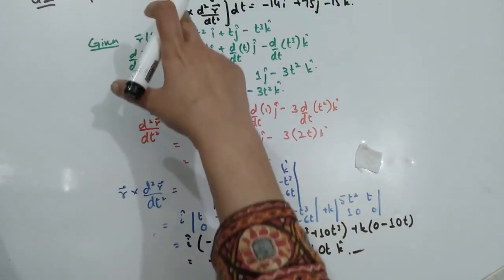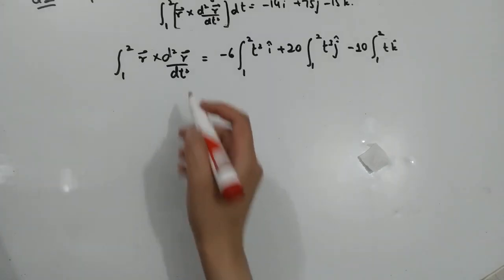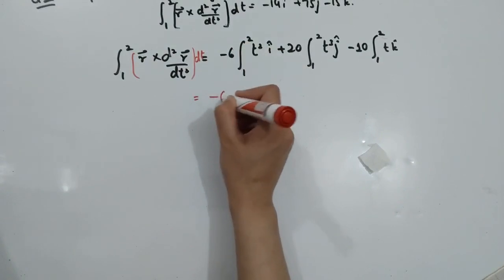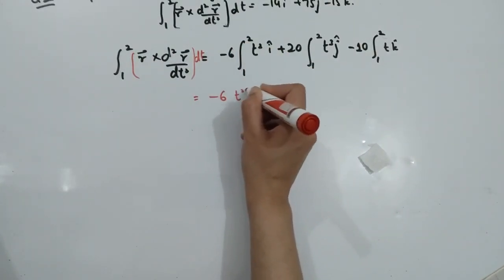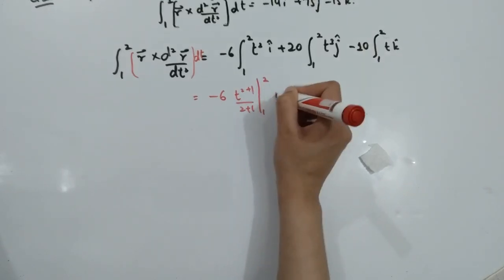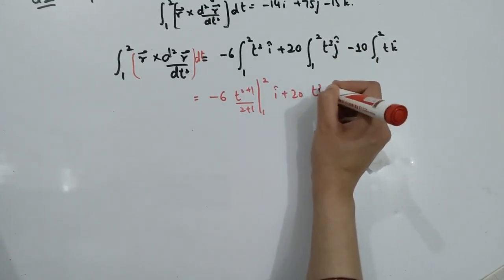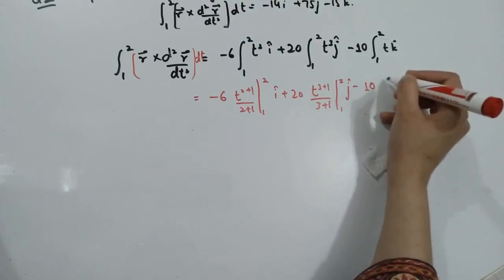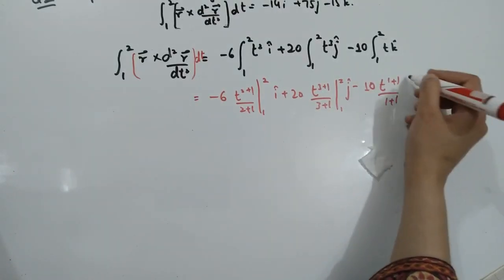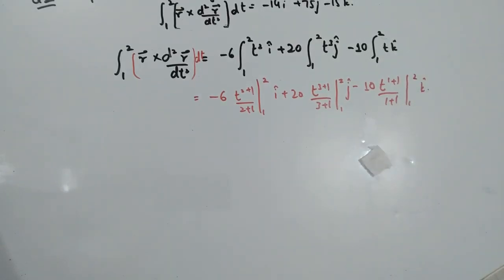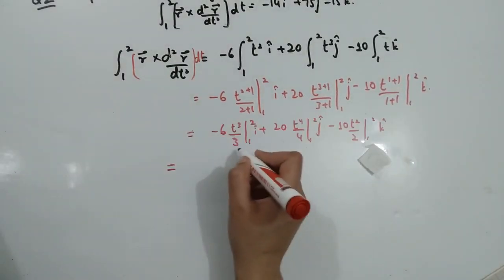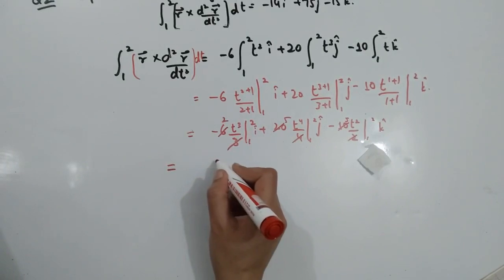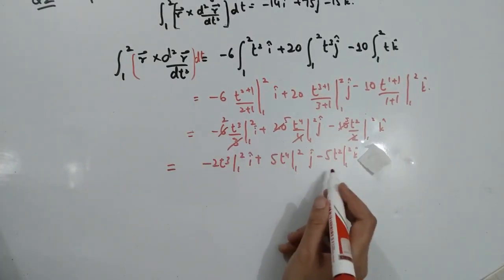Now we integrate this cross product from limit 1 to 2. Applying integration to each component separately: for i, minus 6T squared gives T power 2+1 over 2+1; for j, 20T cubed gives T power 3+1 over 3+1; for k, minus 10T gives T power 1+1 over 1+1. After simplification: minus 2T cubed plus 5T to the 4th minus 5T squared. Applying limits: upper limit 2 minus lower limit 1 in each term gives the final answer.